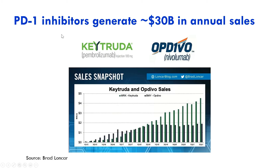It helps to know this context: PD-1 inhibitors, also known as checkpoint inhibitors, are a new class of drugs developed about 10 or so years ago, and they're one of the best-selling drug classes of all time — generating over $30 billion in annual sales. The two main ones are Keytruda and Opdivo, but there are others. They've revolutionized cancer care, and for a subset of patients, these PD-1 inhibitors turn their cancer from a death sentence into a manageable chronic illness.